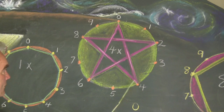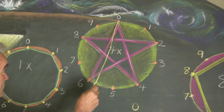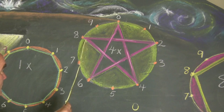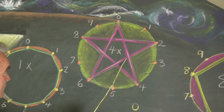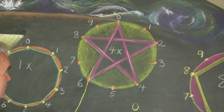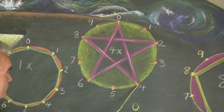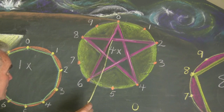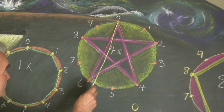And this circle shows the four times tables. So if we start up here at zero: zero times four is zero, one times four is four, two times four is eight, three times four is twelve, four times four is sixteen, five times four is twenty, six times four is twenty-four, seven times four is twenty-eight, eight times four is thirty-two, nine times four is thirty-six, and ten times four is forty.